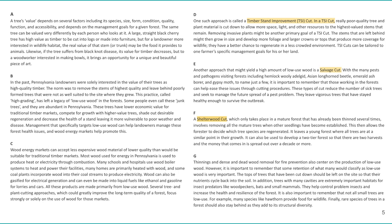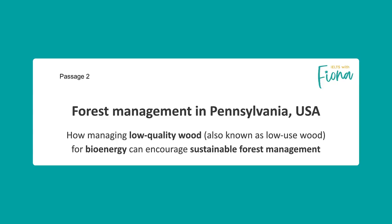Actually, I think it's quite easy too. I'm going to give you some easy tips to get the answers really quickly — in 10 minutes even — without reading in too much detail, honestly. When you look at the subtitle, it's called 'How Managing Low Quality Wood for Bioenergy Can Encourage Sustainable Forest Management.' That really sums up the whole reading — it's about how to manage low quality wood for bioenergy, meaning burning it for energy, so that forests are sustainable. Those are key IELTS topics: the environment and how we can have less impact on ecosystems.